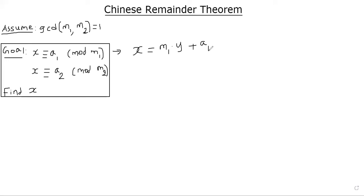Okay, which means as we did in the previous example, we will take this and substitute in the second congruence. So wherever x occurs, we can substitute by M1 y plus A1 is congruent to A2 mod M2. The second congruence.